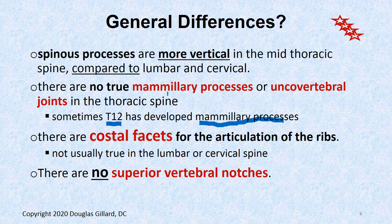There are no uncovertebral joints, although sometimes T1 can have one. There are costal facets for articulation with the ribs — not true of anywhere else. Sometimes C7 has one, but usually not. Sometimes L1 has maybe a demifacet, but usually not. And again, there are no superior vertebral notches.